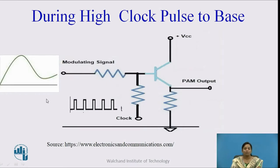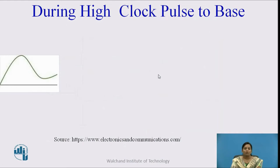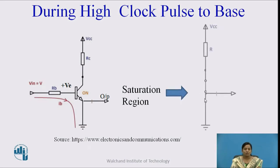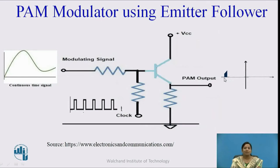During a high clock pulse to the base, when the high clock pulse is given to the base of the transistor, a positive voltage is applied to the base. When we apply positive voltage to the base of a transistor, it works in the saturation region, so the transistor acts as an on switch. The input current flows through the output, through the emitter. So the input current is present across the output for that time period, meaning the output follows the input — the circuit behaves like an emitter follower circuit.